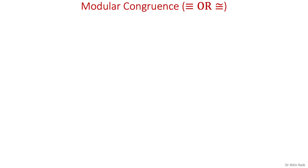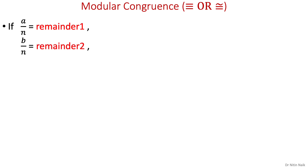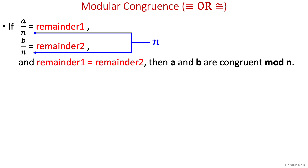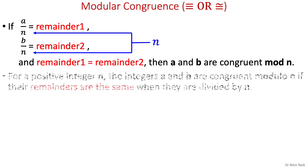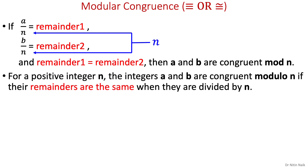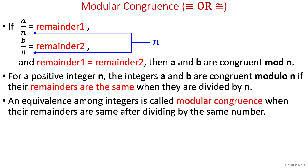Now we know what congruence is in geometry, but we are more interested in congruence in modular arithmetic, which is related to mod and remainder. So if we divide two integers a and b by the same integer n and their remainders are the same, then a and b are congruent mod n. An equivalence among integers is called modular congruence when their remainders are the same after dividing by the same number.